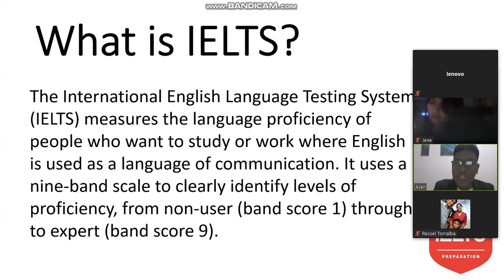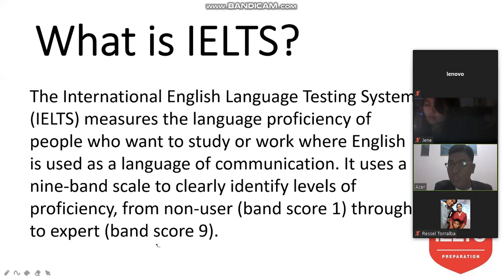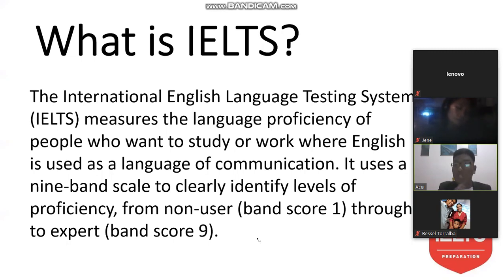It uses a nine-band scale to clearly identify levels of proficiency, from non-user band score one through to expert band score nine. In our school, we usually track those students who want to take the IELTS system training based on the origin of their learning environment.